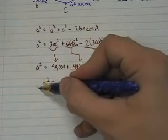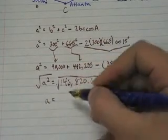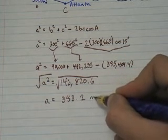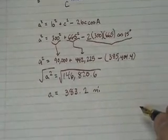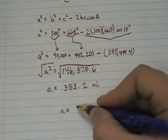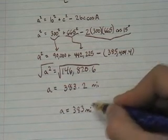And then I'm going to take the square root of both sides and I get A equals 383.2 miles. And of course, they said to the nearest whole mile. So I'm going to round that down. So from Atlanta to Raleigh is 383 miles.